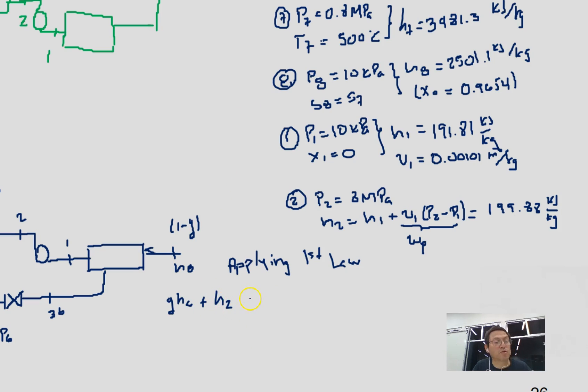Now we need to subtract the streams, the mass flow rate times the enthalpy of the streams that exit. The first one will be y times h3b, the exit of the closed feedwater heater, minus h4. This is equal to zero.